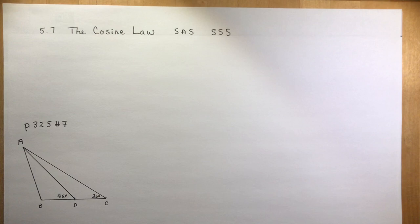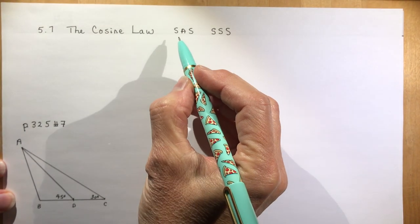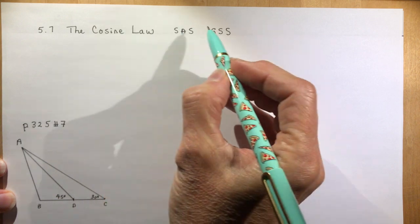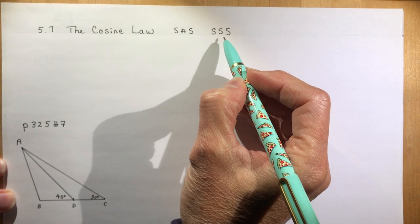Then you're going to look for the sine law — that X pattern we looked at in the last lesson — and finally if that doesn't work, it's going to be the cosine law. Cosine law works when you have side, angle, side, and cosine also works when you have side, side, side.